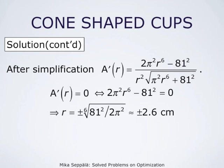Clearly the minus sign is irrelevant because r is the radius of a disc and must be positive. The numerator of the derivative, 2 times pi squared r to the sixth minus 81 squared, is clearly negative when r is less than approximately 2.6, making the derivative negative in that region.